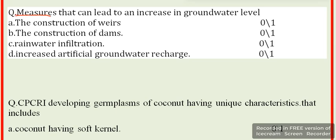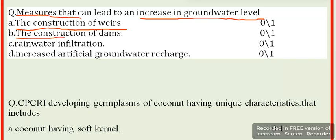Measures that can lead to an increase in groundwater level: Option A includes the construction of weirs. Option B includes the construction of dams. Option C covers rainwater infiltration.